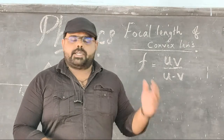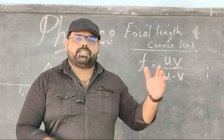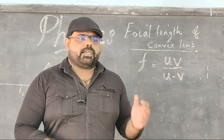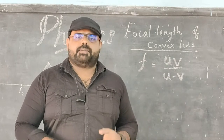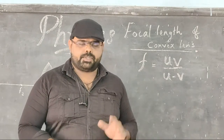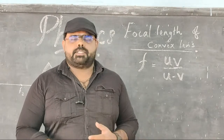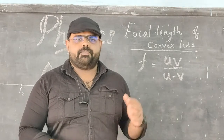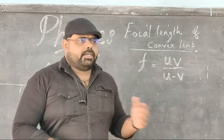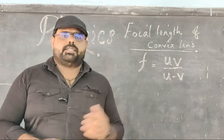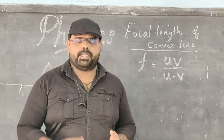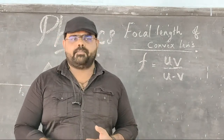We need a real image for our experiment, and that is only possible through the convex lens. If we consider the concave lens, we cannot spot the image on the screen, therefore we cannot do any experiment based on the concave lens. So we are only performing experiments using the convex lens.